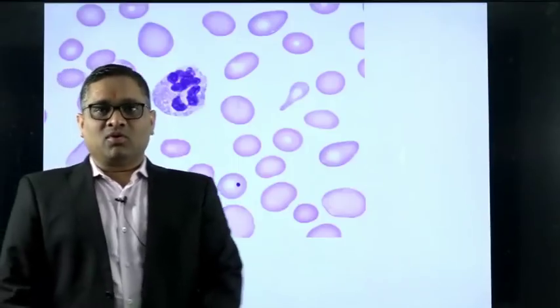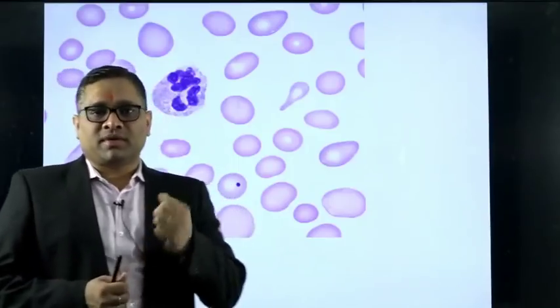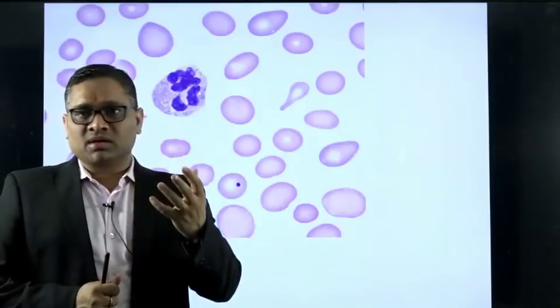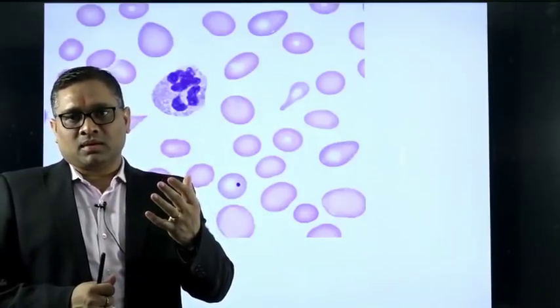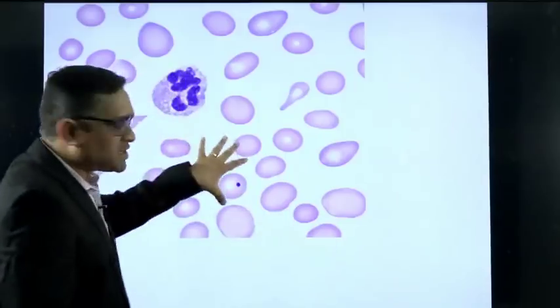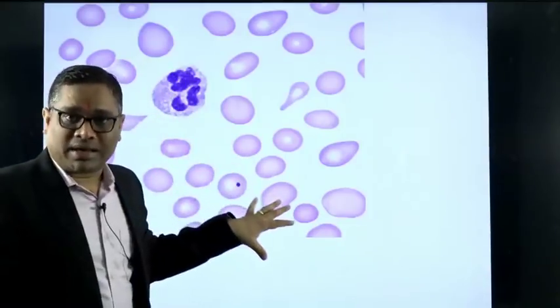I will describe how to approach a peripheral smear in a hematology slide. Whenever we are looking at a hematology slide in our exam or in our textbooks, how should our approach be? Number one: which stain are we looking at?